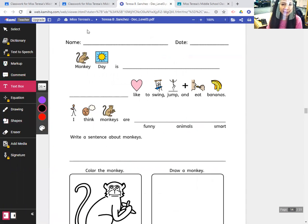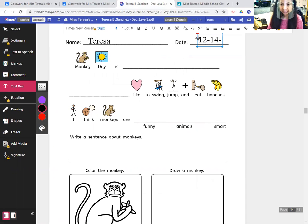Okay, so write your name on the top of the page like this: your first name and the date. So today is December, the 12th month, 14, 2020. And Monkey Day is today, December 14, 2020.